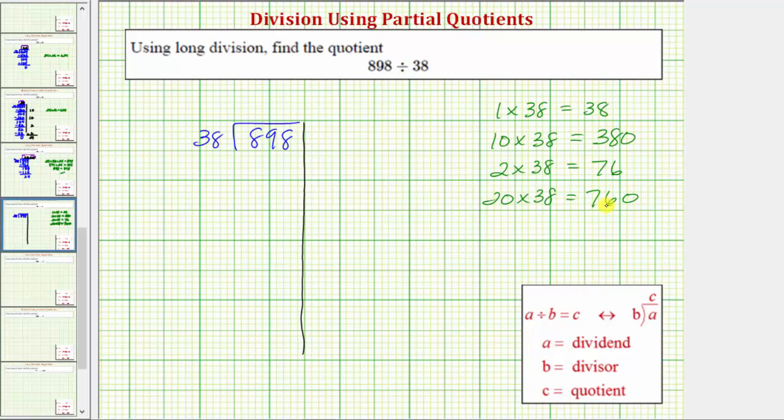So these products will be helpful when using the method of partial quotients. To begin the method of partial quotients, we consider the entire dividend of 898. And because the divisor is 38, we begin by determining a certain number of 38 that we know for sure are in 898. We're looking at our products, because 380 is less than 898, and 380 is equal to 10 times 38, we notice at least 10 38s in 898.